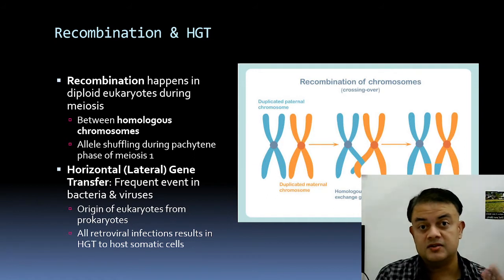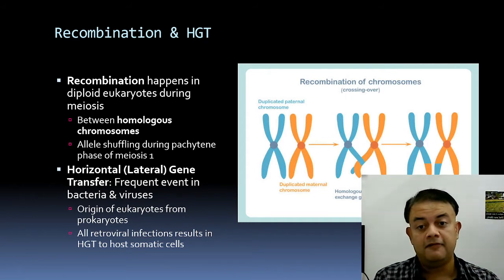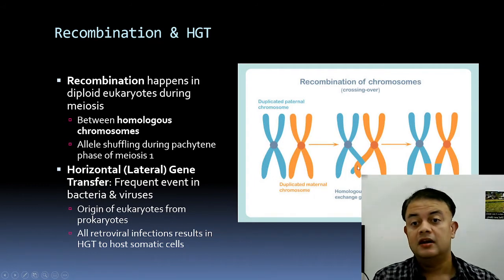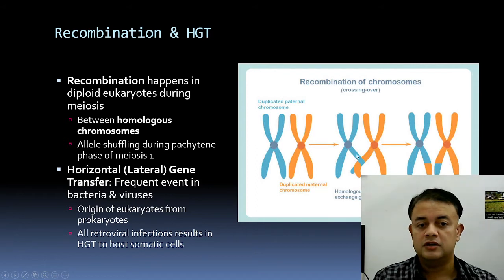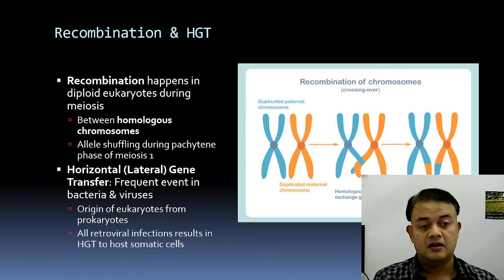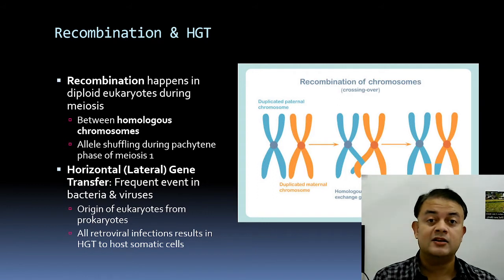Recombination results in a large number of variations and occurs in diploid eukaryotes during meiosis — specifically during the pachytene phase of meiosis I — through crossover between homologous chromosomes from biparental inheritance. The exchange of genetic material from homologous chromosomes results in recombinant chromatids, making recombination a very important mechanism of molecular evolution in sexually reproducing organisms.